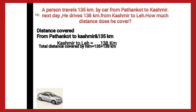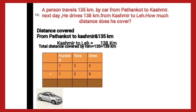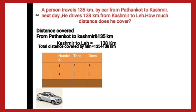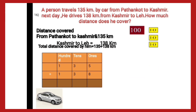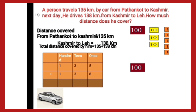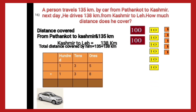To find the total we always add the terms. We will use the place value chart. There are only three digits, so we use ones, tens, and hundreds, placing them according to their place value. In the first number we have 1 hundred, 3 tens, and 5 ones. In the next we have 1 hundred, 3 tens, and 8 ones.